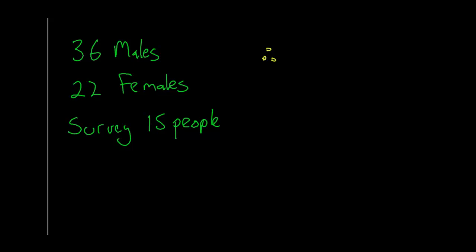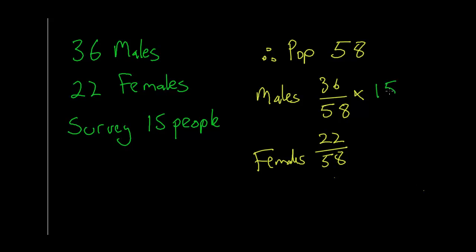So let's say we've got a population which has 36 males and 22 females. Which gives us our population in total will then be 58 because we're just adding the two of them together. So if we're going to look at our males we'd need to have 36 out of the 58 males and the females as 22 out of the 58. Now our sample size is 15 and this will give us the number of people from each group that we have to survey.